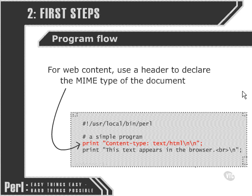What's also important is that if we're going to be running our scripts on the web, we'll need to include a line of code that will produce our header. This header has to come before any other output has been written to the web browser. The content type has to be specified, otherwise the web browser won't know what it's accessing and the web server won't be able to interpret what the Perl script is trying to do. For most cases, we're going to be producing HTML.